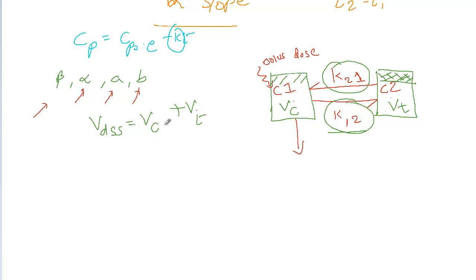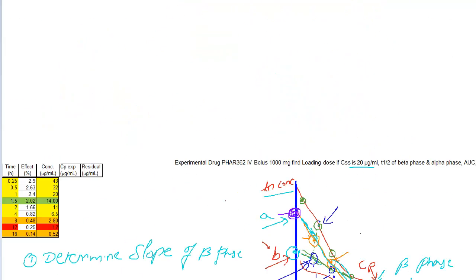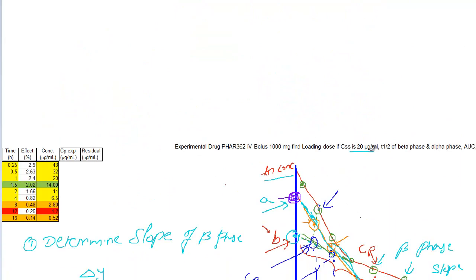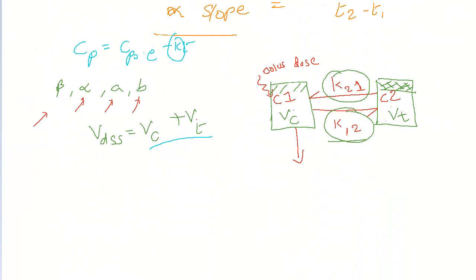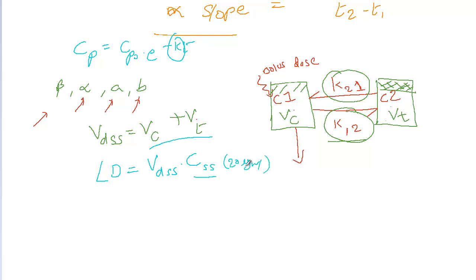The formula for volume of distribution at steady state is Vc plus Vt. We have to find out the loading dose if concentration at steady state is 20 microgram per ml. The equation for loading dose is volume of distribution at steady state times plasma concentration at steady state.